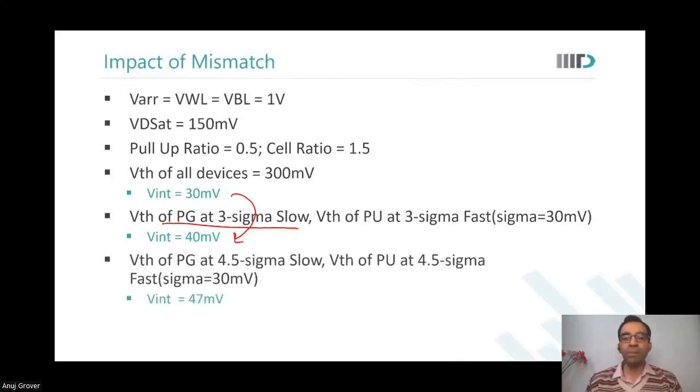We see VInt rises from 30 to 40. You increase the VT of the pass gate and you also increase the VT of the pull-up and you see this goes still further. So the system is degrading.